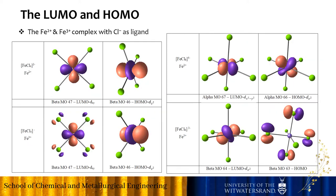Here are the HOMO and LUMO for the Fe²⁺ and Fe³⁺ chloride complexes. When there are four chlorides, it forms a tetrahedral complex, and when there are six chlorides, it forms an octahedral complex.